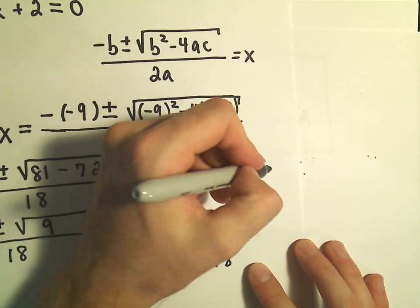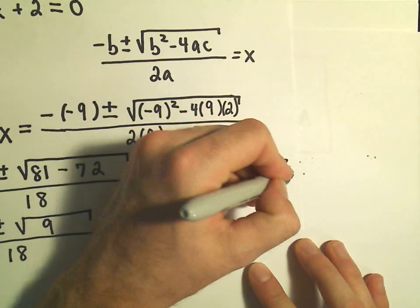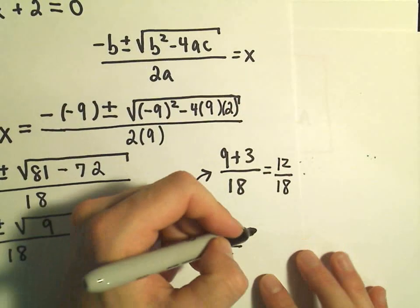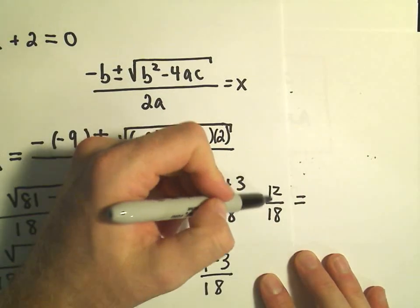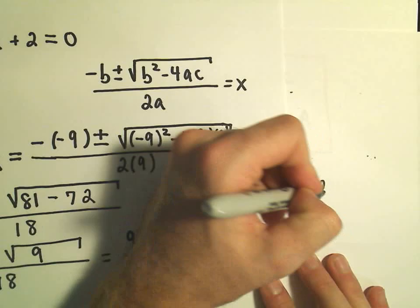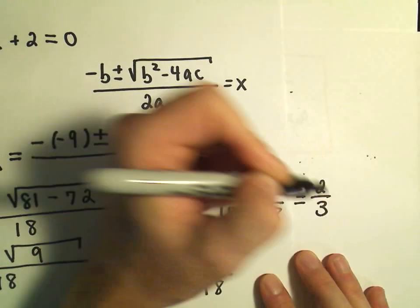9 plus 3 is 12 over 18. And we can actually reduce 12 over 18. 6 will divide into both of those. So we can reduce 12 over 18 to positive 2 thirds.